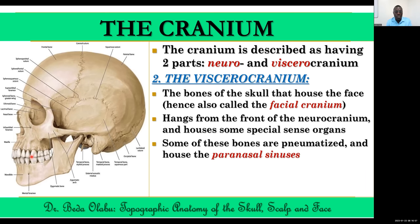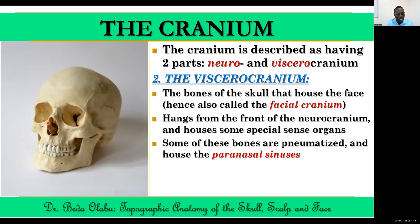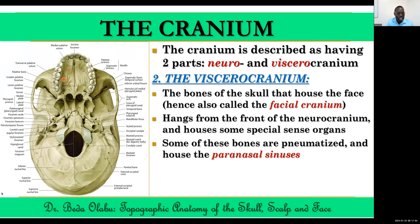Some bones of the facial cranium are pneumatized, meaning they have air cells or air spaces within them. This is particularly true for the bones around the nasal cavity, and for this reason those spaces are termed paranasal sinuses. In this image of the facial cranium, we can see the lower jaw, the maxilla, the zygomatic bone, the nasal bone, the vomer, and the palatine bone.